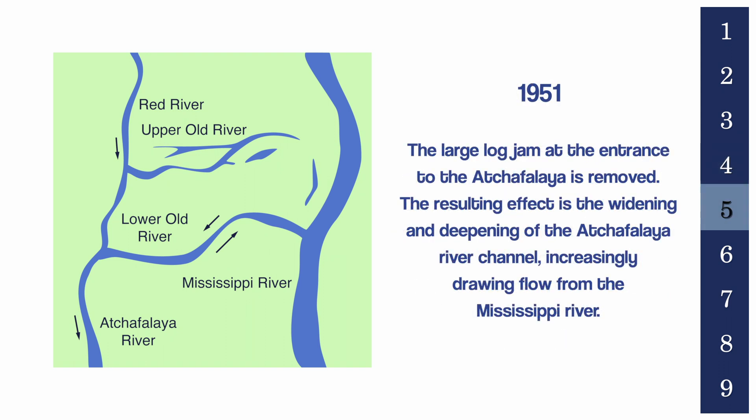In 1951, the large log jam at the entrance to the Atchafalaya was removed. The resulting effect was the widening and deepening of the Atchafalaya River channel, increasingly drawing flow from the Mississippi River.